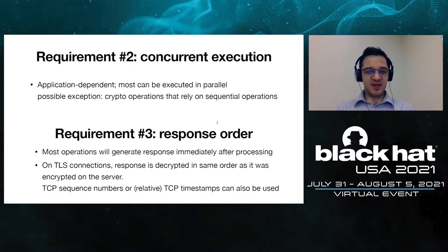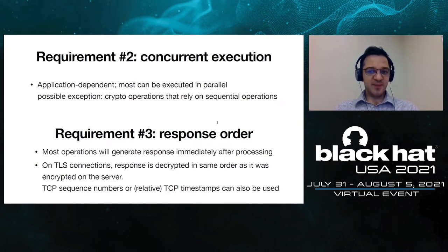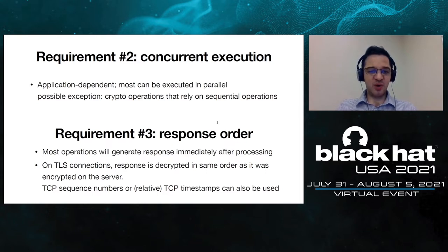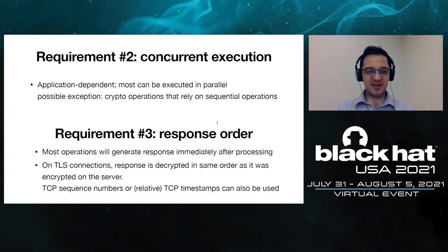The third requirement is that the response order must reflect execution time — the server must generate and send a response immediately after finishing processing. Additionally, the order of responses must remain the same when they arrive at the adversary. This is usually the case since both responses follow the same network path. Even if responses are reordered, the adversary can use TCP sequence numbers or TCP timestamps to recover the original send order.